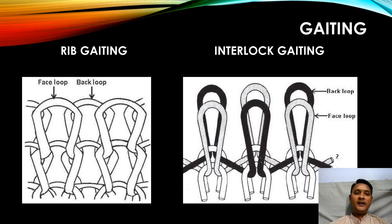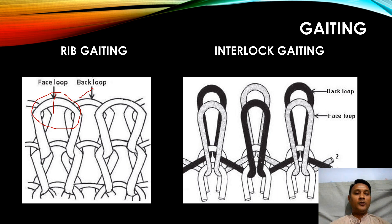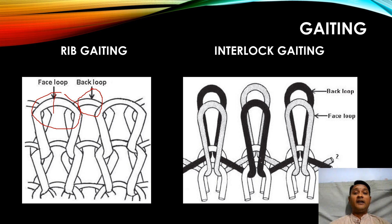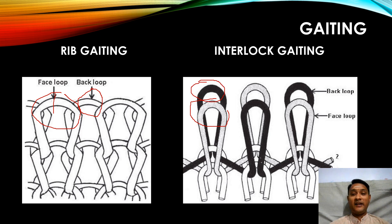In rib gating, the face loop — the loop made by the cylinder — and the back loop — the loop made by the dial — will not face each other. Whereas in interlock gating, the face loop and back loop will be placed face to face.